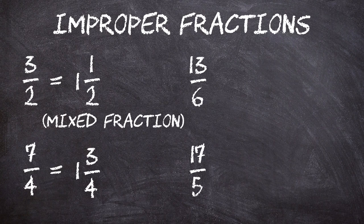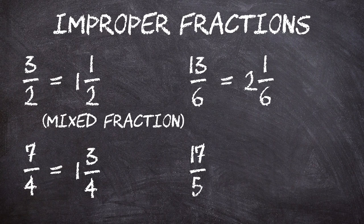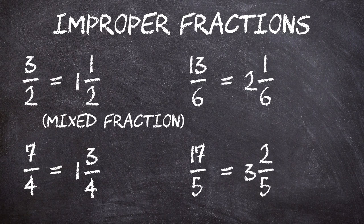Next, we have thirteen over six. How many times does six go into thirteen? Twice, with a remainder of one. We write down two in front, and put the remainder of one on top of the six, to give us two and one-sixth. Thirteen-sixths equals two and one-sixth. For the last one, we have seventeen over five. How many times does five go into seventeen? Three times, with a remainder of two. So the resulting mixed fraction will be three and two-fifths. Three and two-fifths is the same as seventeen-fifths.